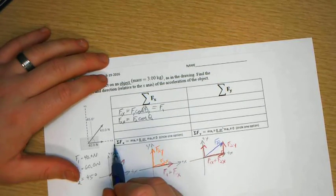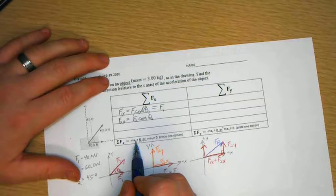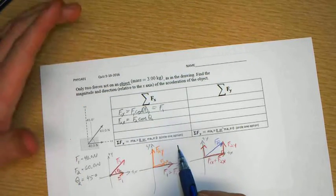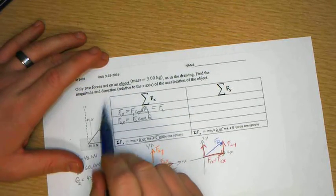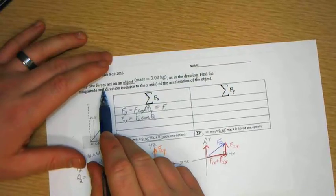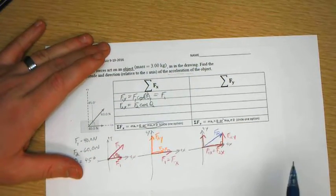The sum of that is always going to equal mass times acceleration. Now, the acceleration could be 0 or could not be 0. In this case, it is not 0, because these are the only two forces acting on the object. So there is a net force, and we're finding the acceleration caused by that net force.